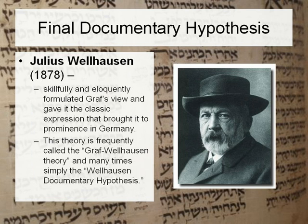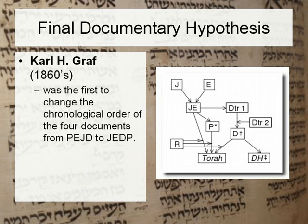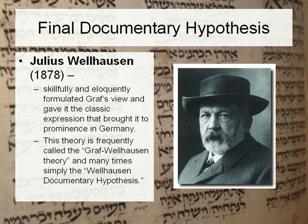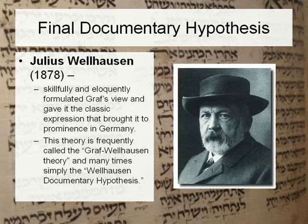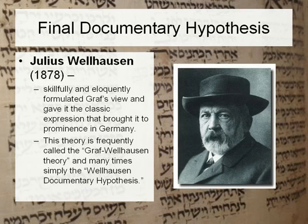Finally, Julius Wellhausen, a German scholar who skillfully and eloquently formulated Graf's view, showed up. Graf had the ideas, but Wellhausen had the literary artistry — he knew how to write a compelling, plausible book. He gave the classic expression to this view and brought it to prominence in Germany. It is therefore frequently called the Graf-Wellhausen theory, and often simply the Wellhausen Documentary Hypothesis.